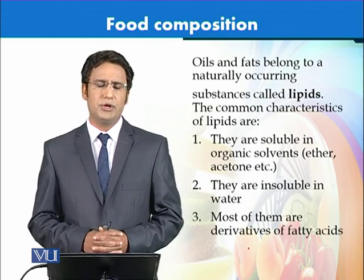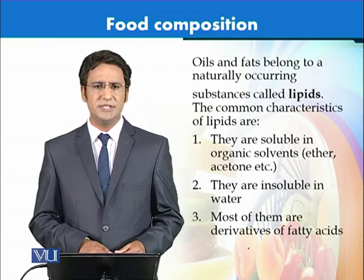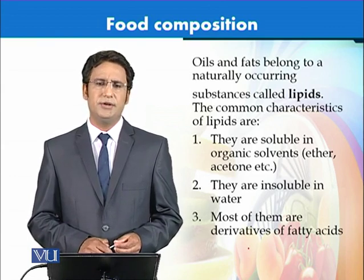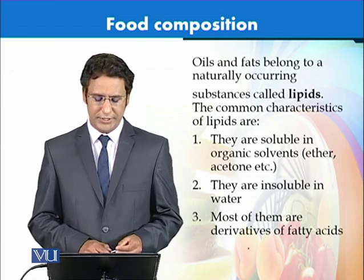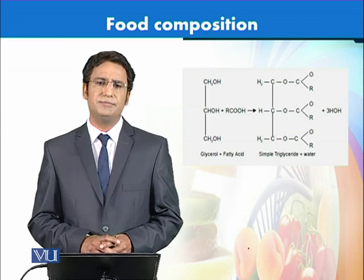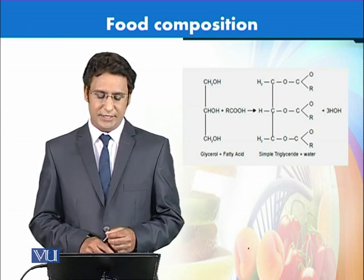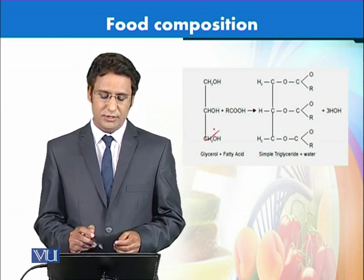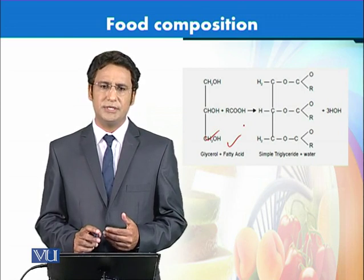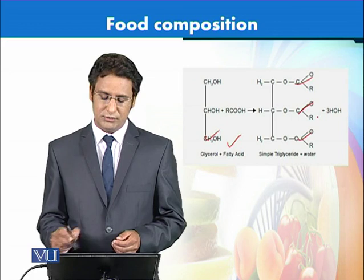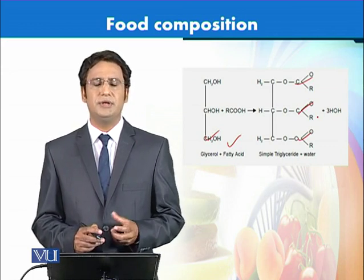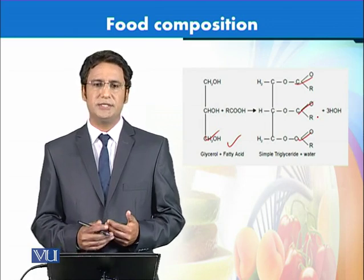The next important component of food composition is fats and oils, also called lipids. Lipids are generally soluble in solvents like hexane or ether, and insoluble in water — a common characteristic of all lipids — and most are derived from fatty acids. The chemical structure of triglycerides is made up of a glycerol molecule with up to three fatty acids attached. When three fatty acids are attached to the glycerol molecule, it is called a triglyceride. Most lipids are a combination of different triglycerides where different types of fatty acids are attached.